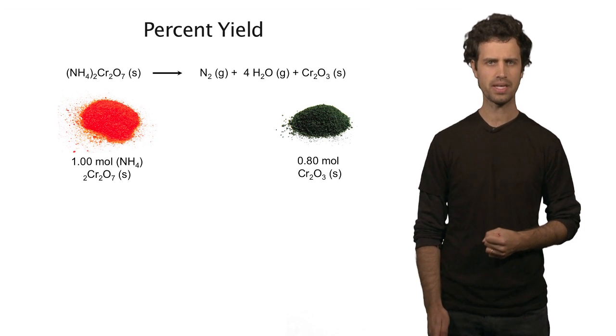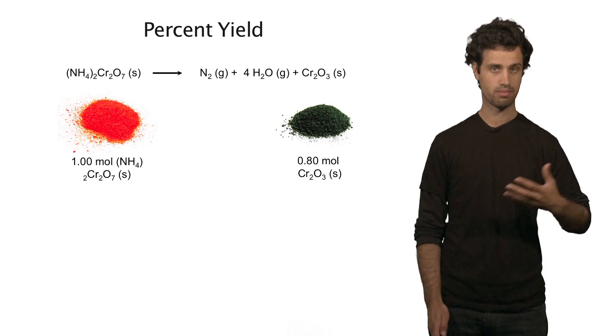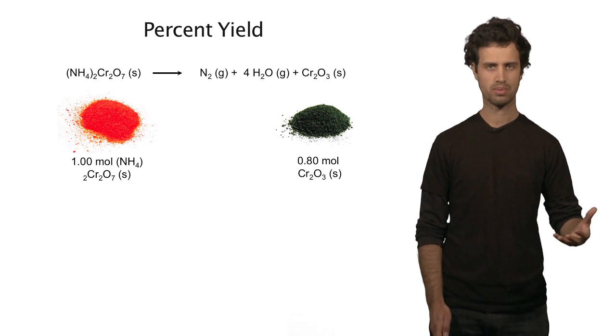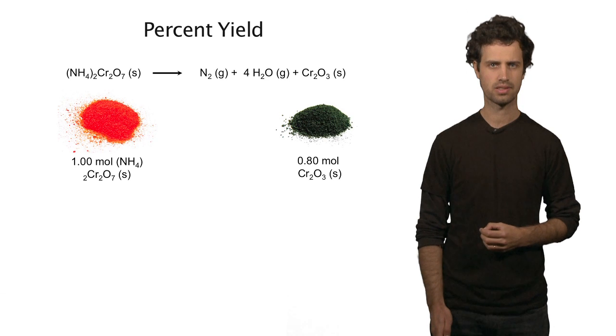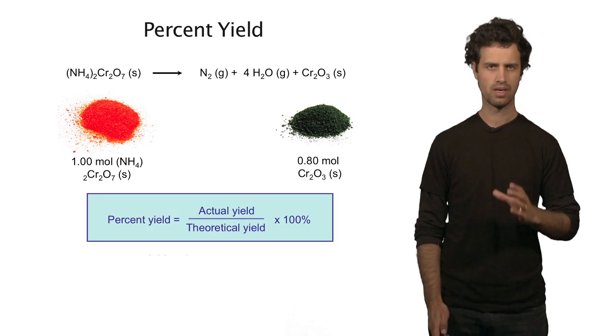Well, that's because the reaction is incomplete. An incomplete reaction can occur because of pollutants in the reagent, temperature may be off, too much moisture in the air, a whole variety of reasons. In order to quantify this mismatch, there is a quantity called percent yield.